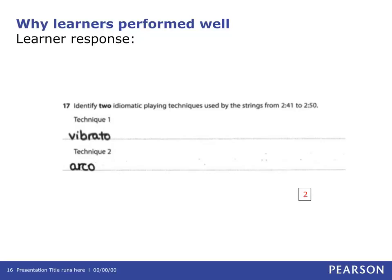Question 17. As with Question 7b, some learners were unable to understand the term 'idiomatic techniques' and provided responses relating to tempo and dynamics. Misspelling of key technical language is seen quite often, and centres are encouraged to be mindful of learners' usage of the correct spelling of key music vocabulary. This example shows two accurate responses gaining a total of two marks.